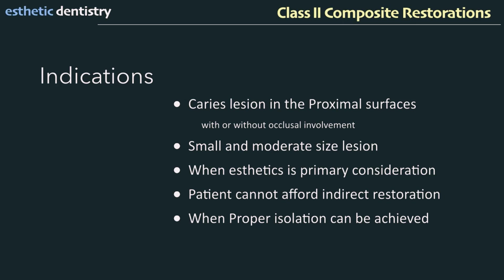The indications are almost the same as whenever doing a composite restoration in the posterior region: small and moderate restorations, preferably within enamel margins; most premolar and molar restorations when aesthetics is in high demand; restorations that do not bear all occlusal contacts; patients not suffering from parafunctional habits; restorations where adequate isolation can be achieved; some restorations as foundations for crowns; and very large restorations used to strengthen remaining or weakened tooth structure.